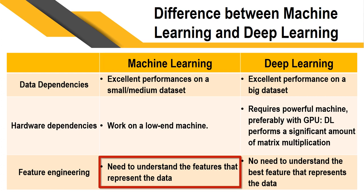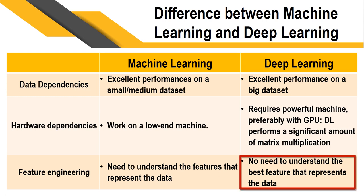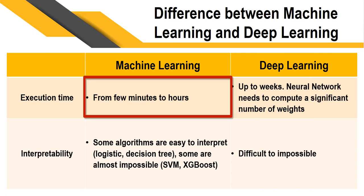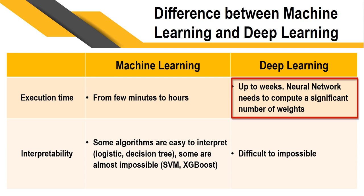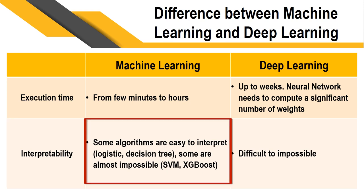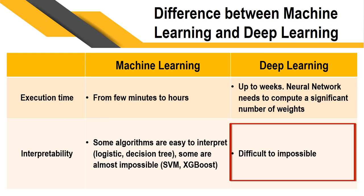For feature engineering: in machine learning, we must manually understand and extract features, whereas in deep learning there is no need — it extracts features automatically. For execution time: machine learning takes only a few minutes to hours, while deep learning can take up to weeks depending on GPU strength. For interpretability: machine learning algorithms are easy to interpret, but deep learning interpretability ranges from difficult to impossible.